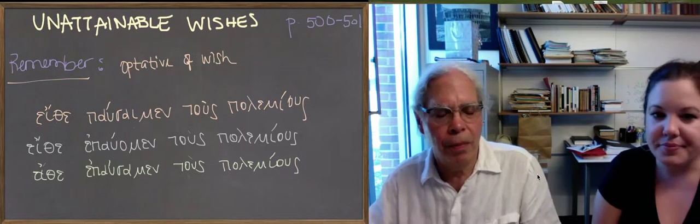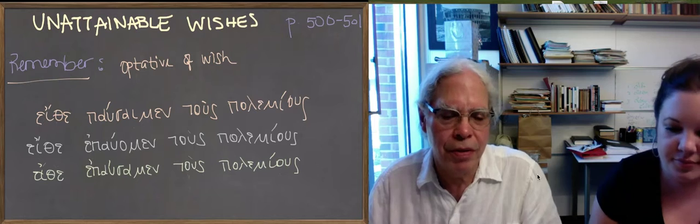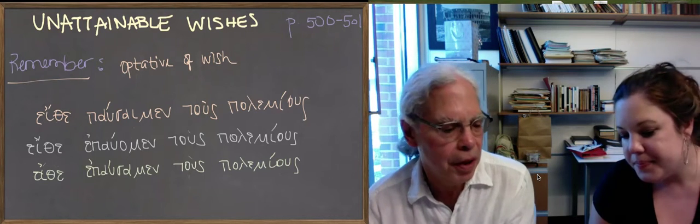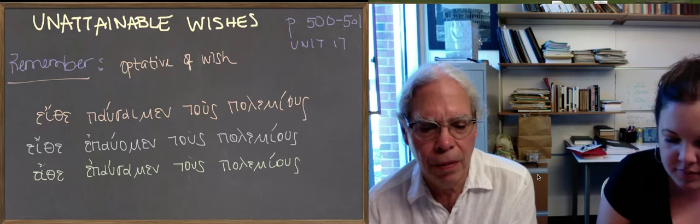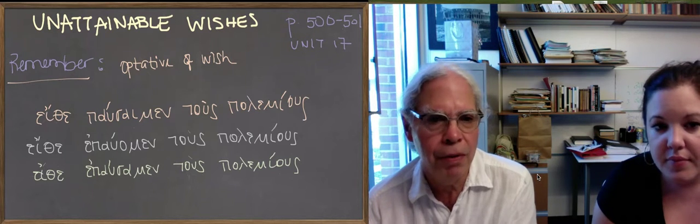All right, so we're talking about unattainable wishes as the last piece of syntax in Unit 17. Before we do that though, we're going to review a little bit.